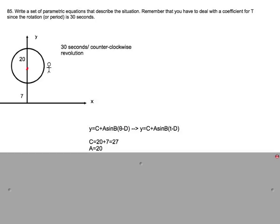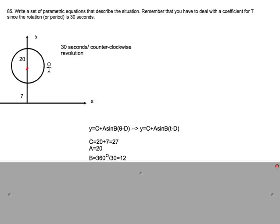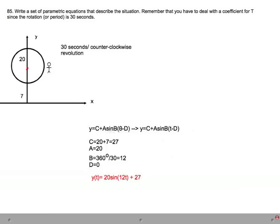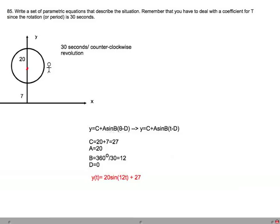We have the same relationship with the B value of 12 degrees per second with the phase displacement D of 0 because we start at a maximum. Now our final Y equation is 20 sine 12t plus 27.